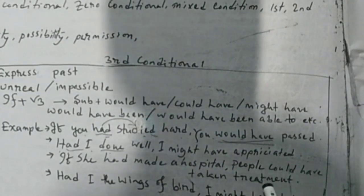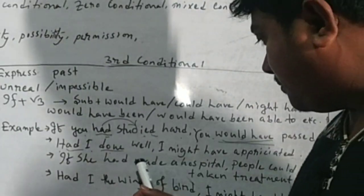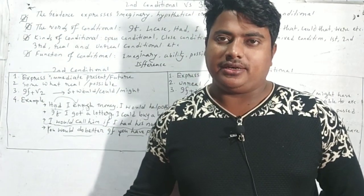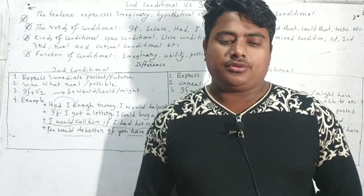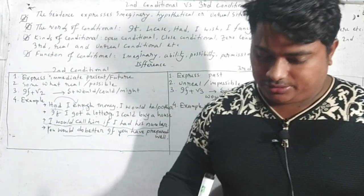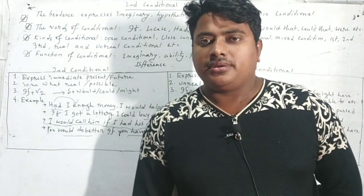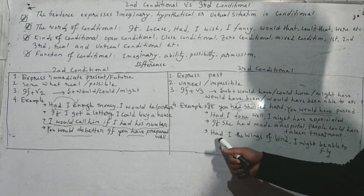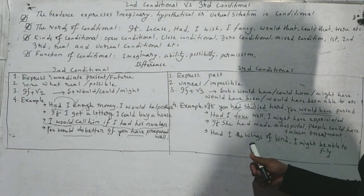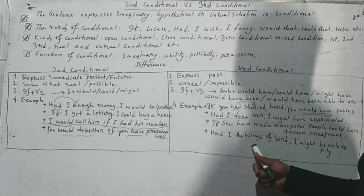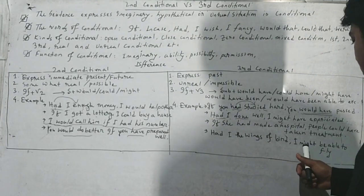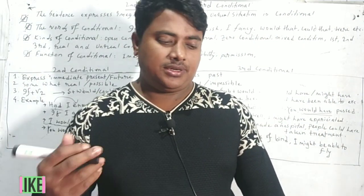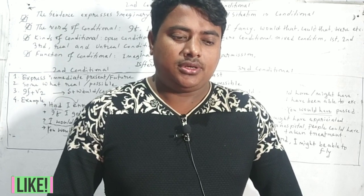Then if she had made a hospital, people could have taken treatment. If she had made a hospital, you didn't yet establish a hospital. So it is not expected. It is not able to treat any patients. It is hypothetical situations. Had I the wings of bird, though the 'had' does not follow any V3 or past participle, but here I might be able to fly. It is sometimes regarded as third conditional.